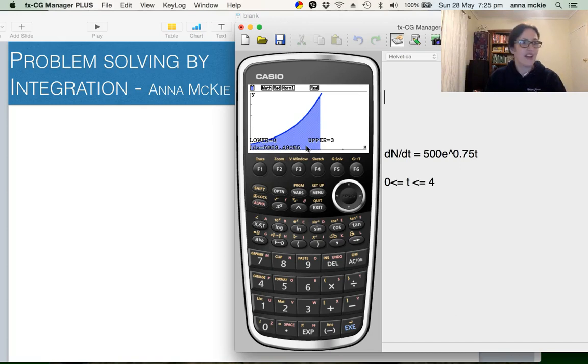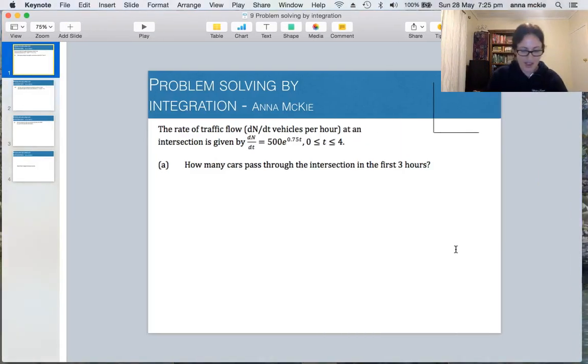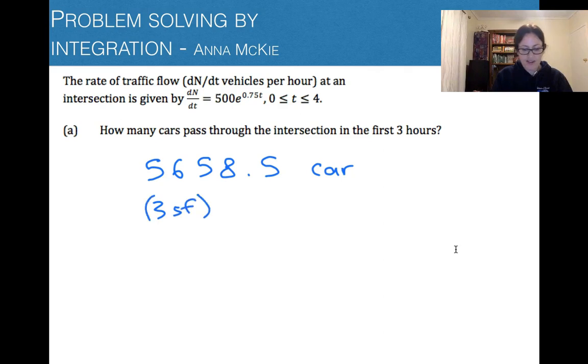So I'll write that down for you because it might be a little bit hard to see. It was how many cars passed through the intersection in the first three hours? It was 5,658.5 cars. We should probably round that. Practicing rounding to three significant figures, we'd have 5660 cars because we can't have 0.5 of a car.